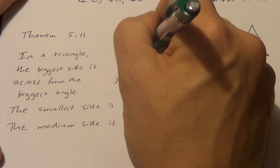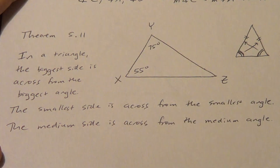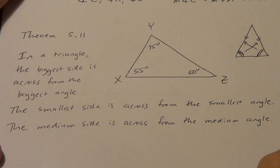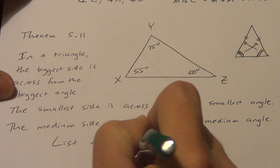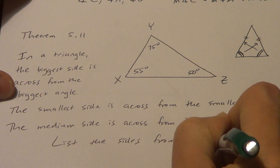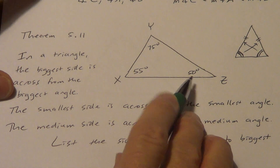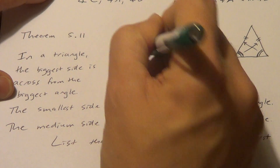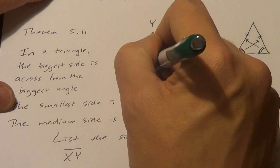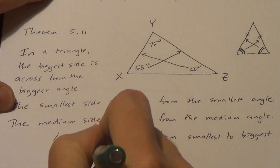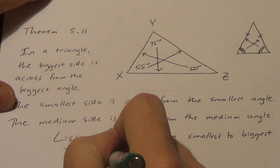Let's put some angle measurements on this triangle: 75 degrees, 55 degrees, and since 75 plus 55 is 130, that leaves 50 degrees for the third angle. Let's list the sides from smallest to biggest. Smallest angle is 50, which takes me to side XY — that's my smallest side. 55 is the medium angle, which takes me to YZ, my medium side. The biggest angle, 75, leads me to XZ, my biggest side.